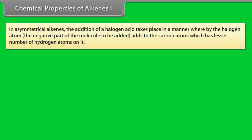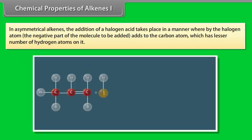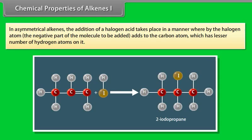In asymmetrical alkenes, the addition of a halogen acid takes place in a manner whereby the halogen atom — the negative part of the molecule to be added — adds to the carbon atom which has the lesser number of hydrogen atoms on it. For example, in the case of propene, the product obtained is 2-iodopropane and not 1-iodopropane. This rule of addition of halogen acids to an asymmetrical alkene is known as Markovnikov's rule.